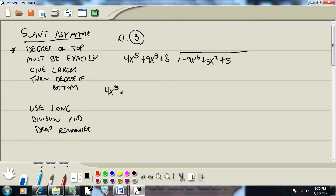So I've got 4x to the fifth. I'm missing the x to the fourth, so I'll put a zero x to the fourth plus 9x to the third. I'm missing an x squared, so I've got zero x squared. I'm missing an x, so zero x. And then my constant term is there. Then inside, my largest power is the x to the sixth, so I've got negative 9x to the sixth, zero x to the fifth, zero x to the fourth, 3x to the third, zero x squared, zero x, and then my constant. You'll find if you put zero placeholders, it makes your division simpler.